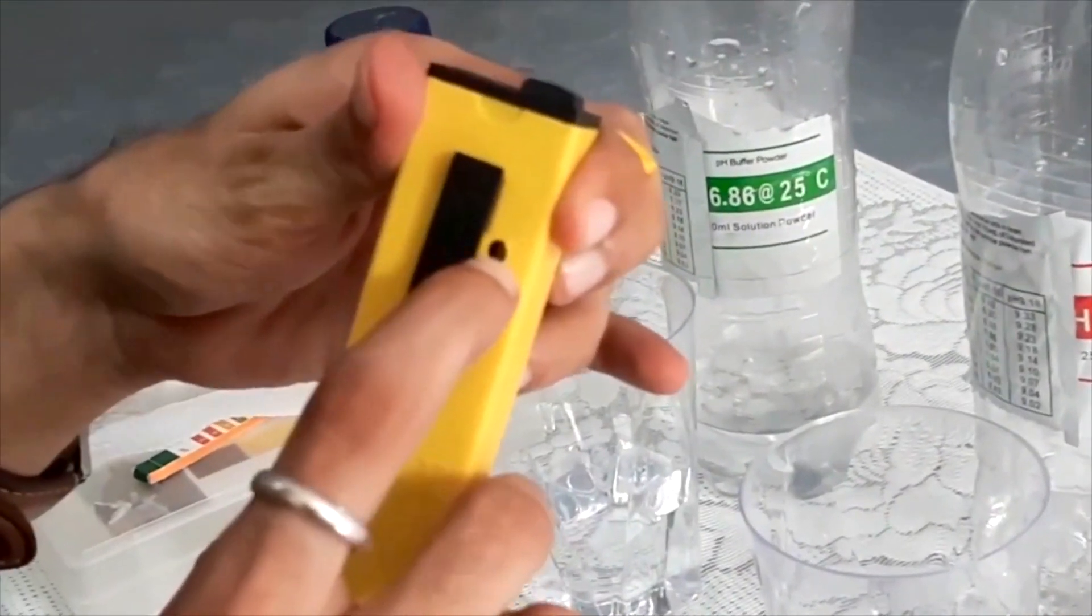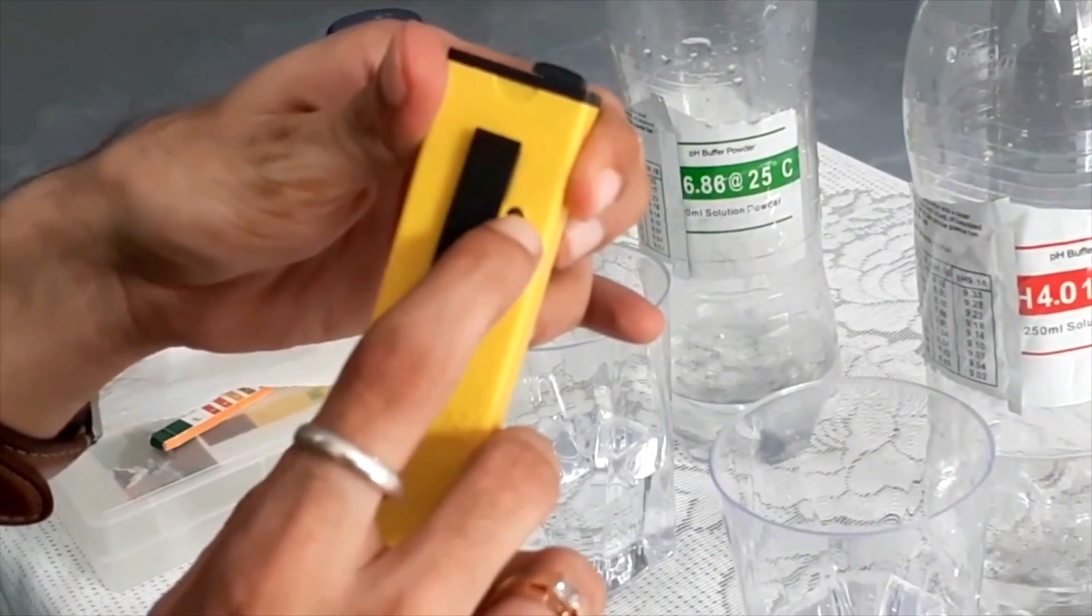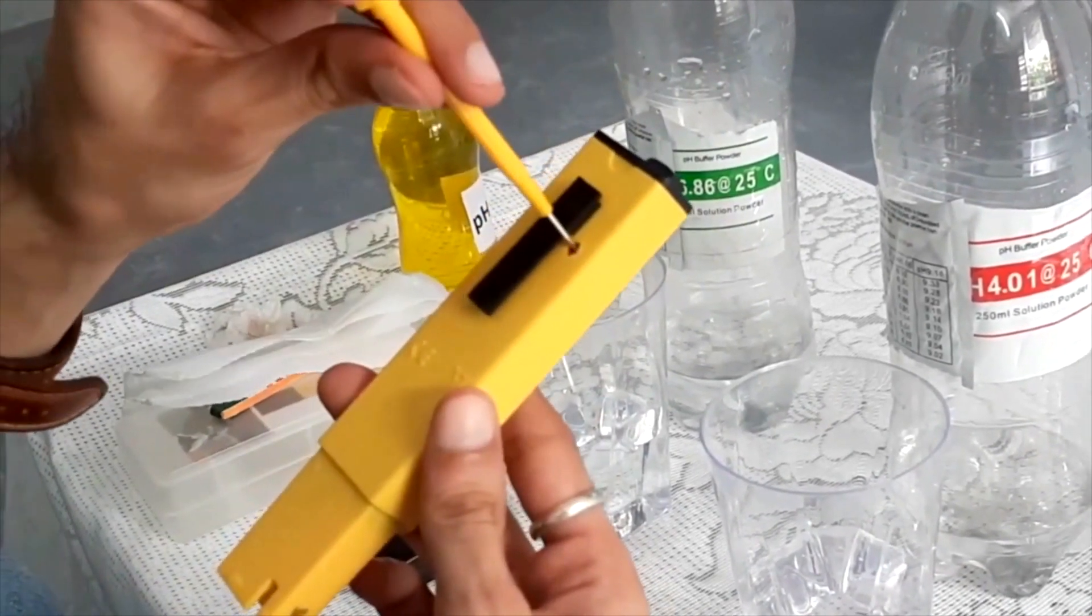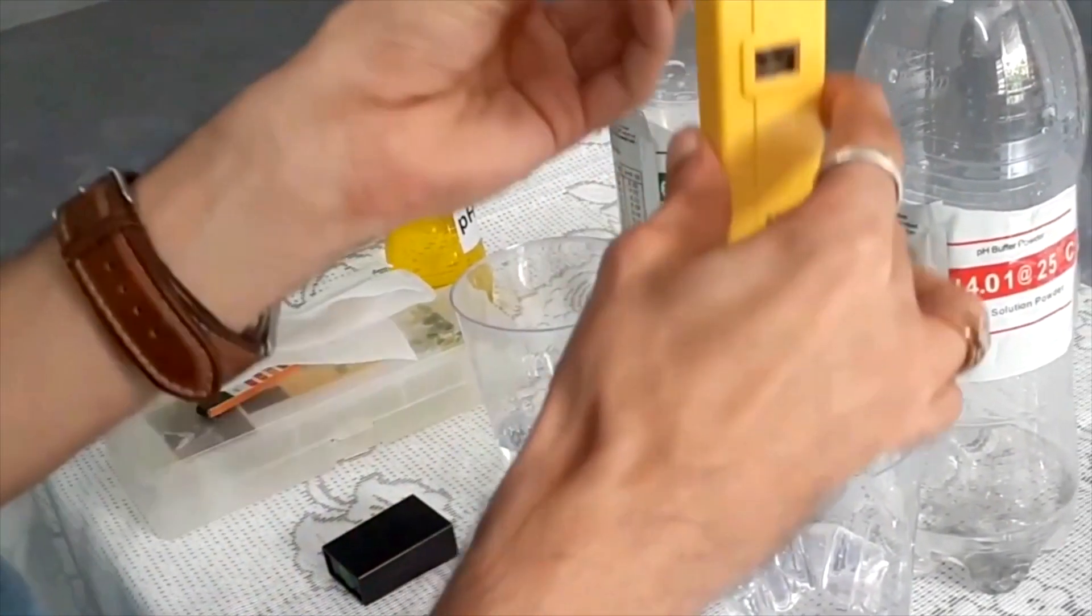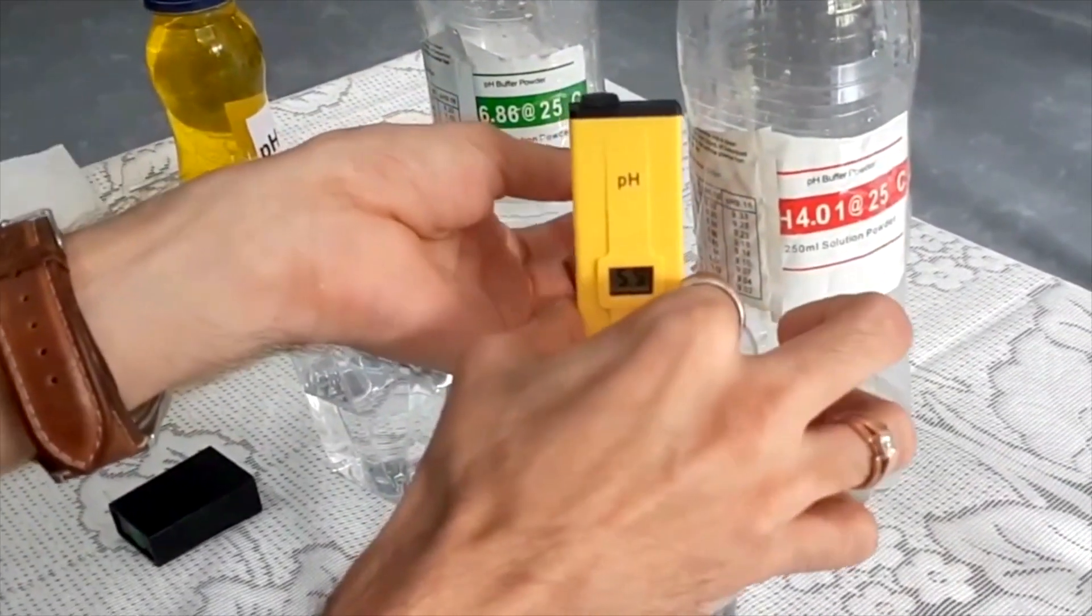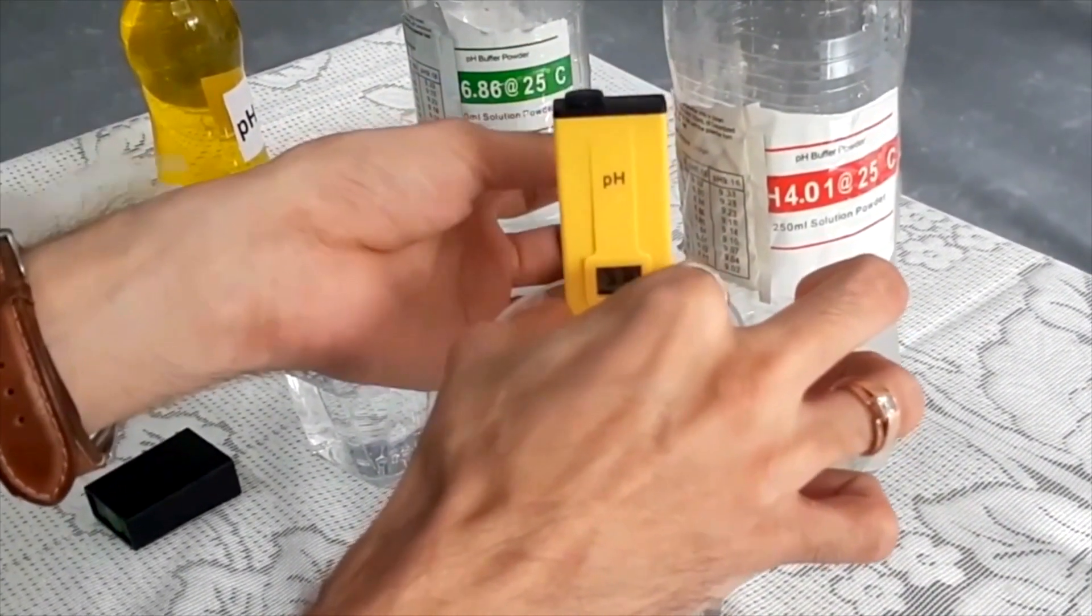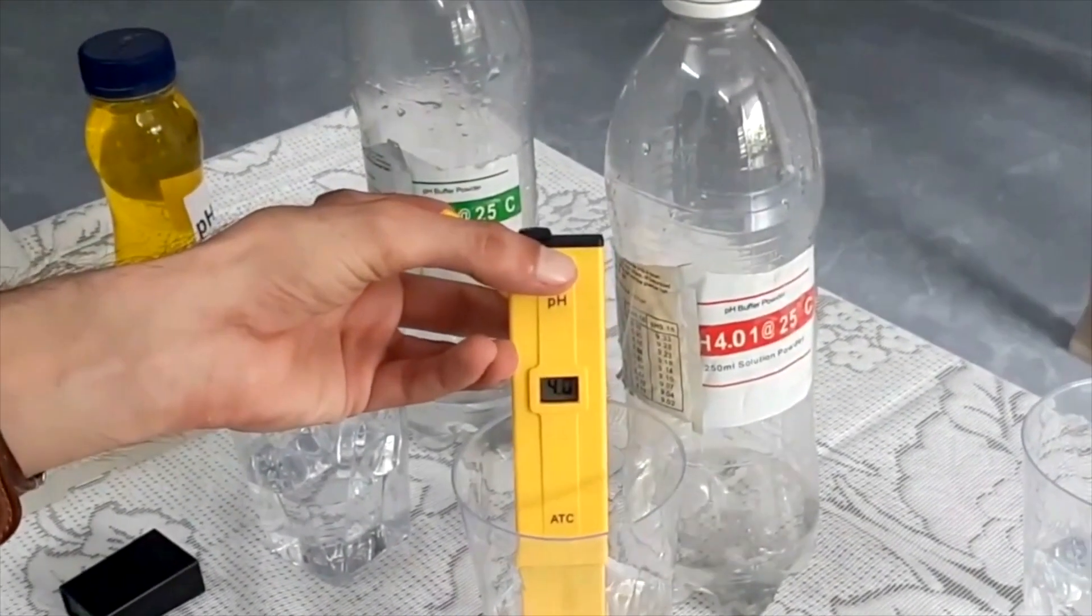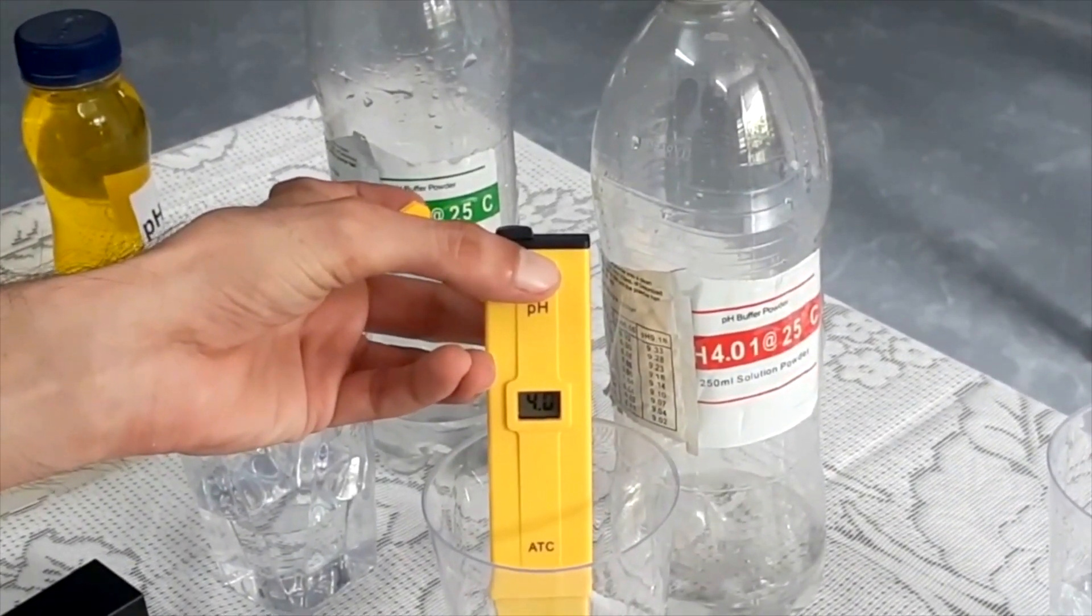The screwdriver goes here and you need to rotate the screw left or right depending on whether you want to increase or decrease the value. Redip the meter with the screwdriver connected at the back. As you can see, I have stopped rotating the screwdriver as soon as the meter shows 4.0.